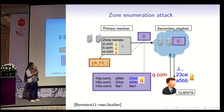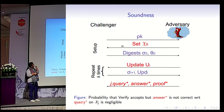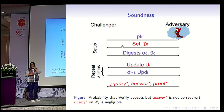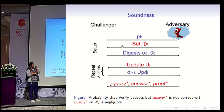The adversary gets back the digests and can adaptively ask for update queries, receiving the corresponding updated digests as a response. Finally, it comes up with an index j, a query, an answer, and a proof. We say it is able to forge if the answer was not correct with respect to the query on database chi-j, but the proof was accepted. This should happen with negligible probability. For example, if in set chi-j, x was not an element but the adversary was able to prove that it was, that's a forgery.